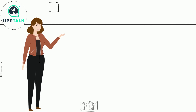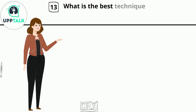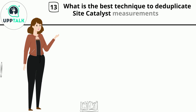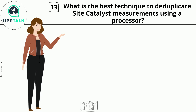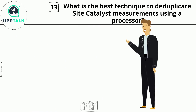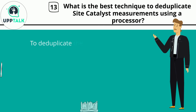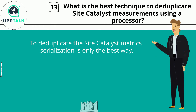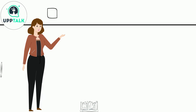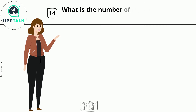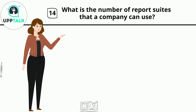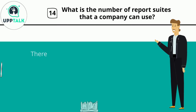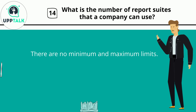Question 13: What is the best technique to deduplicate Site Catalyst measurements using a processor? To deduplicate the Site Catalyst, metric serialization is the best way. Question 14: What is the number of report suites that a company can use? There are no minimum and maximum limits.